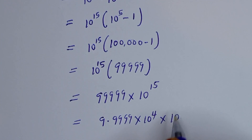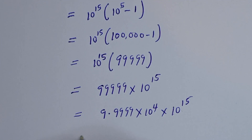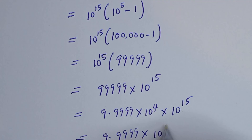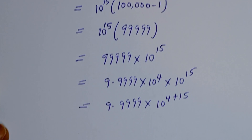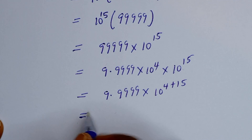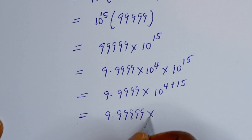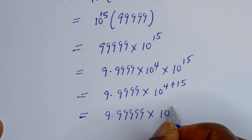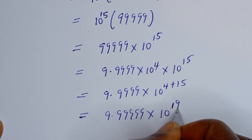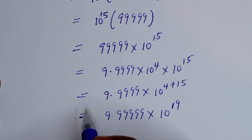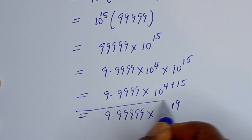This is the same as 9.9999 times 10 raised to power 4, times 10 raised to power 15, which equals 9.9999 times 10 raised to power 4 plus 15, that is 10 raised to power 19. So the final answer is approximately 9.9999 times 10 raised to power 19.